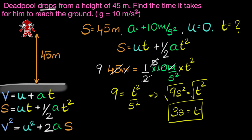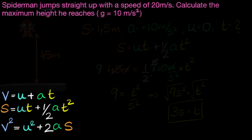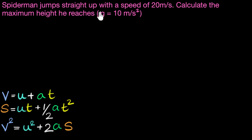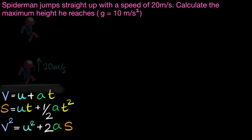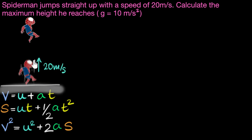Let's now consider another problem. Spider-Man jumps straight up with a speed of 20 meters per second. Calculate the maximum height he reaches. Again, G is 10 meters per second squared. Can you try to solve this one yourself? Make a quick drawing, see what is given, what is asked, and then pick an equation to use. So here's Spider-Man jumping straight up with a speed of 20 meters per second.